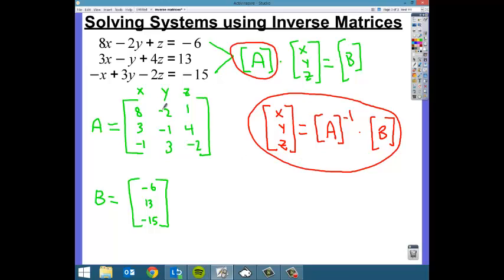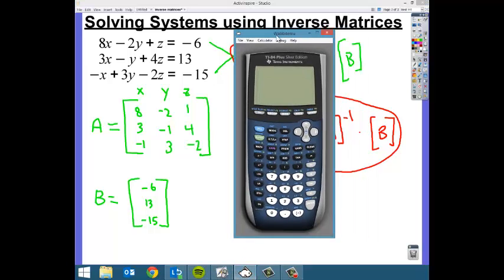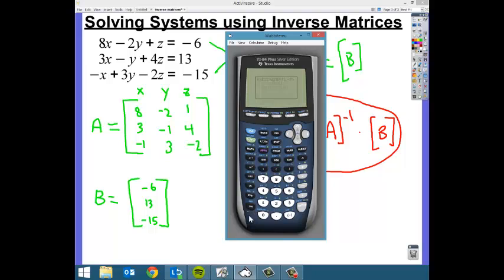So to do that, we need to input matrix A and matrix B in our graphing calculator. So get one of those out if you have one. Now, the first thing that I would do is make sure that your memory is cleared. The easiest way to do that is 2nd plus 7, 1, 2. If you haven't memorized that yet, you should. It's an easy thing to remember. 2nd plus 7, 1, 2.